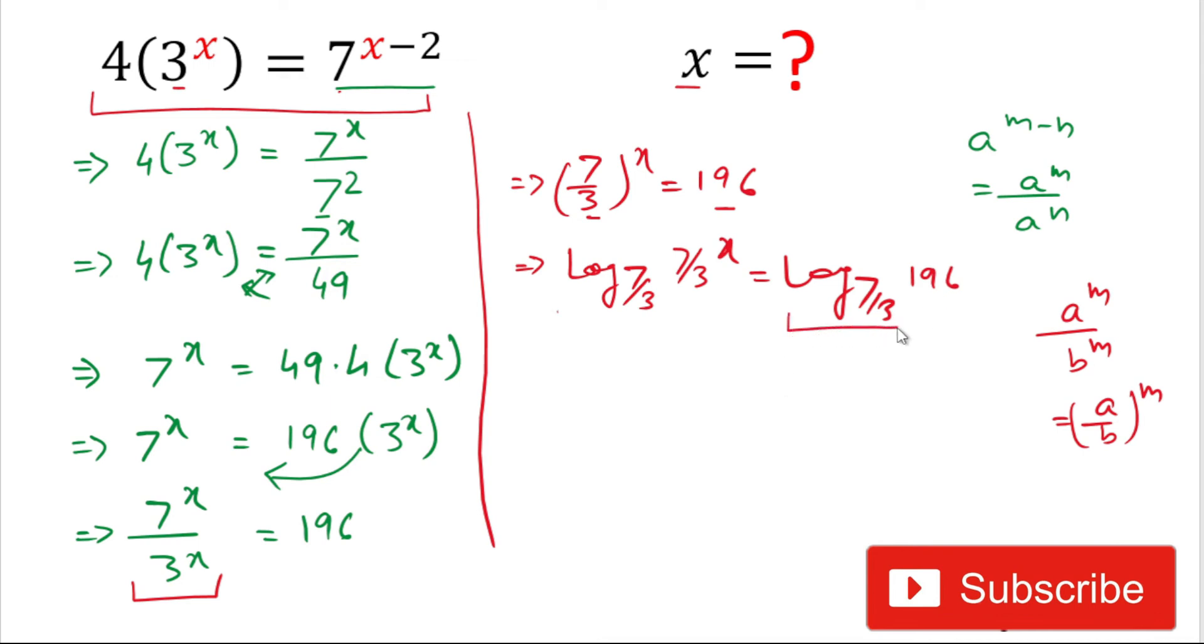Here in both the sides we have taken log with base 7 by 3. Now we'll simplify it. It is x times log base 7 by 3 of 7 by 3 equals log base 7 by 3 of 196.